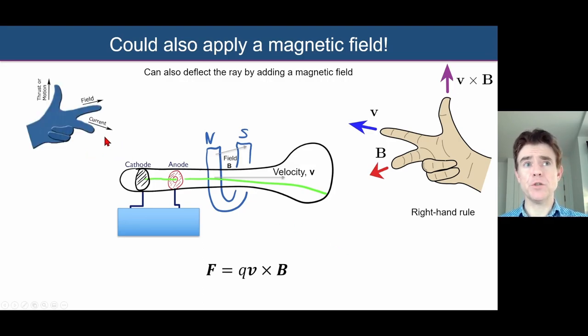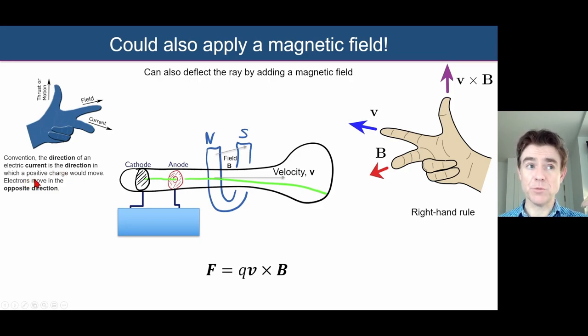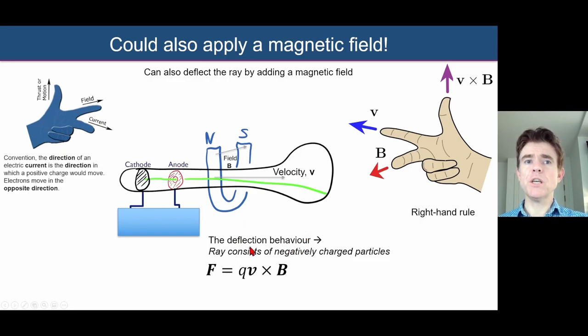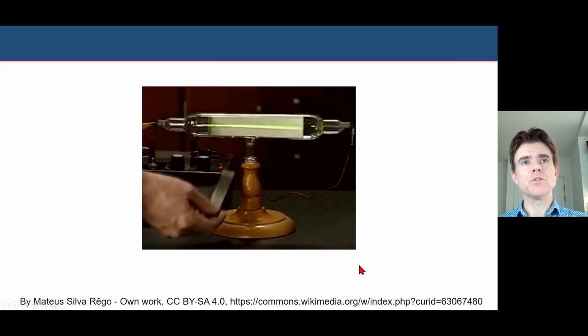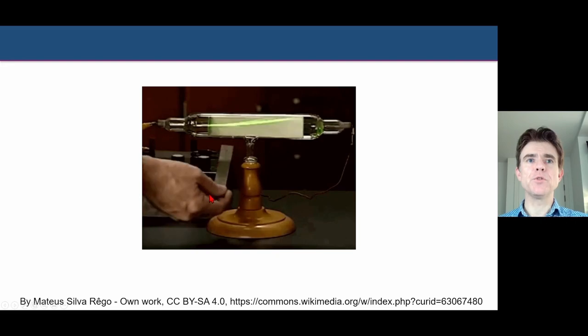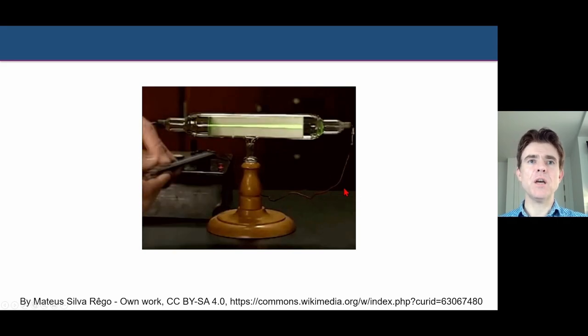And also you might look at Fleming's left-hand rule as well as a way of understanding this, just remembering though that current is in the conventional direction of flowing from, in terms of direction of flow of a positive charge. So bear that in mind if you do pause the video to check that alternative understanding. So again, the deflection behavior is consistent with negatively charged particles. So we can focus now on just the magnitude of that force arising from the magnetic field B applied to particles of velocity V. So this is a little video of what happens with a bar magnet, showing indeed that these cathode rays can be deflected by a magnetic field.